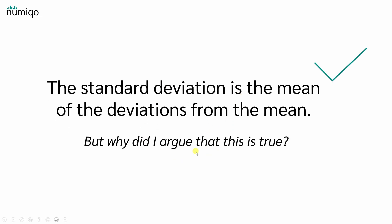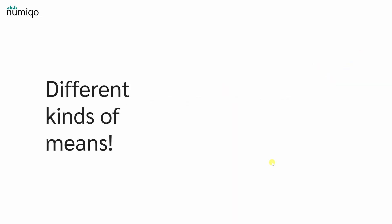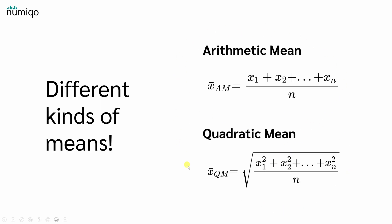But why did I argue that it is true? Okay, there are different kinds of means. For example, there is the arithmetic mean and the quadratic mean. And yes, I admit, when we talk about the mean, we are generally referring to the arithmetic mean. But nevertheless, the quadratic mean, also called the root mean square, is also a kind of mean.